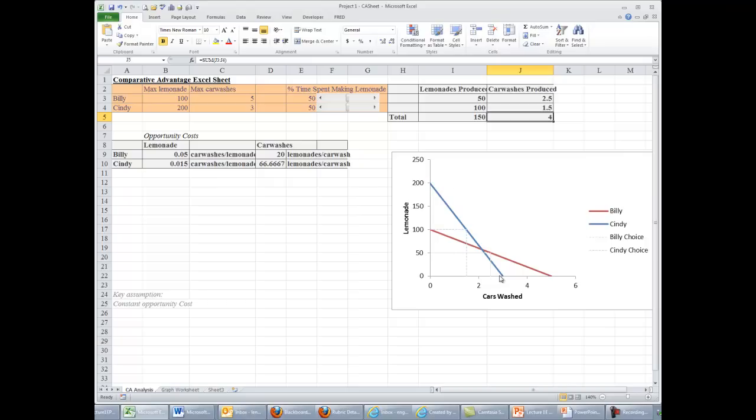Now another thing that changed were these graphs. This graph shows the production possibility frontier. So this shows that, for example, for Billy, Billy being the red line, all of these are possibilities. So Billy could, if he wanted to, spend all of his time making lemonade. I will shift him that direction right now. So spending all his time making lemonade, at which point he produces 100 lemonades, but no car washes.